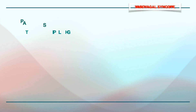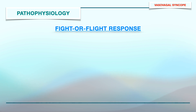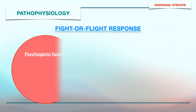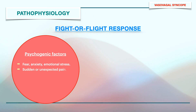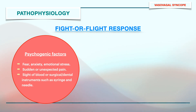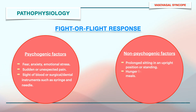Let's start with understanding the pathophysiology. It basically involves a fight or flight response that may occur due to several predisposing factors. These factors may be psychogenic such as fear, anxiety, emotional stress, sudden or unexpected pain, sight of blood or surgical instruments such as syringe and needle, or non-psychogenic factors such as prolonged sitting in an upright position or standing, hunger from fasting or missed meals, hot, humid, crowded environment, and exhaustion.